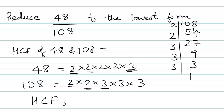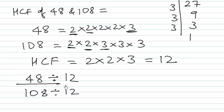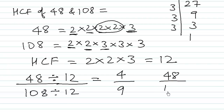So the HCF or GCD is 2 × 2 × 3, which equals 12. Both 48 and 108 can be divided by 12, and 12 is the biggest such number where the division gives a whole answer. 48 ÷ 12 = 4 and 108 ÷ 12 = 9. So 48/108 is the same as 4/9, and since 4 and 9 share no common factors, this is the smallest possible fraction.